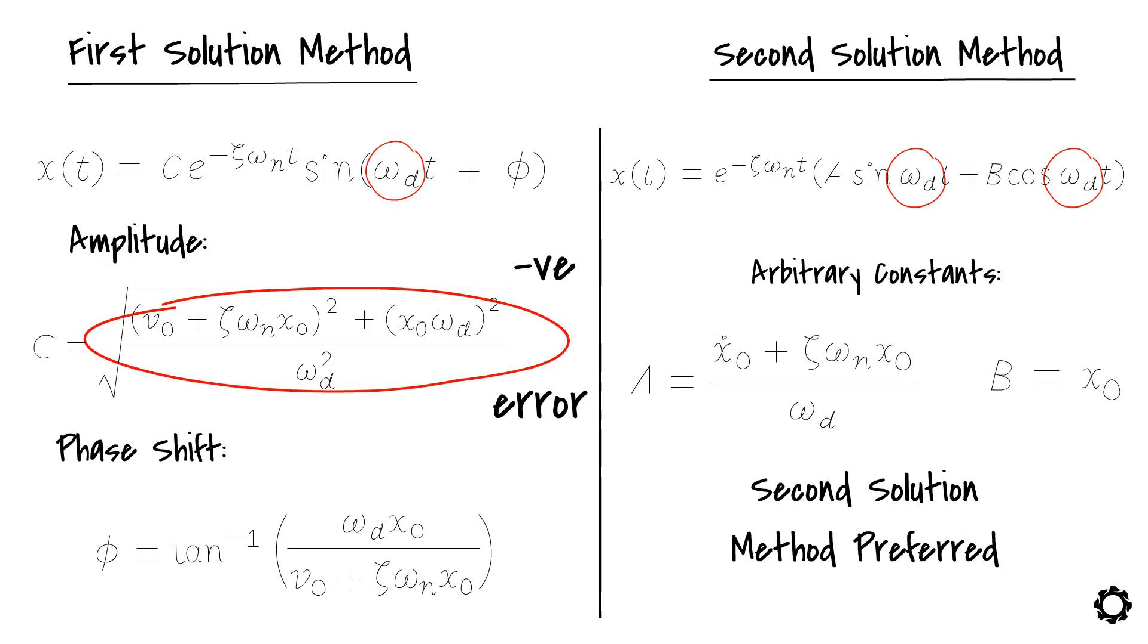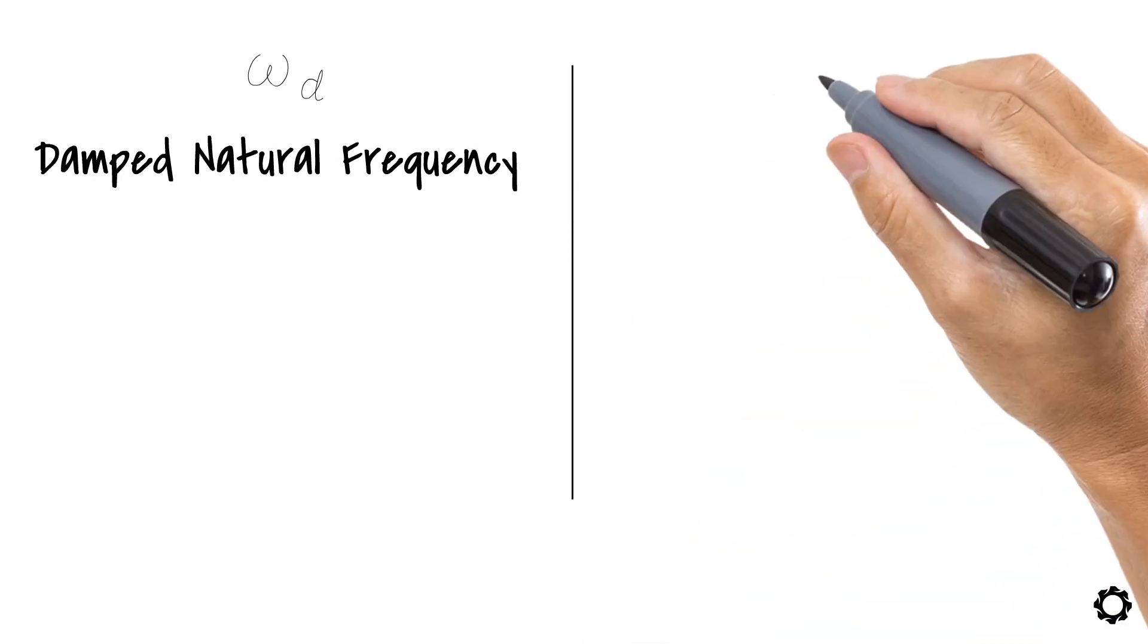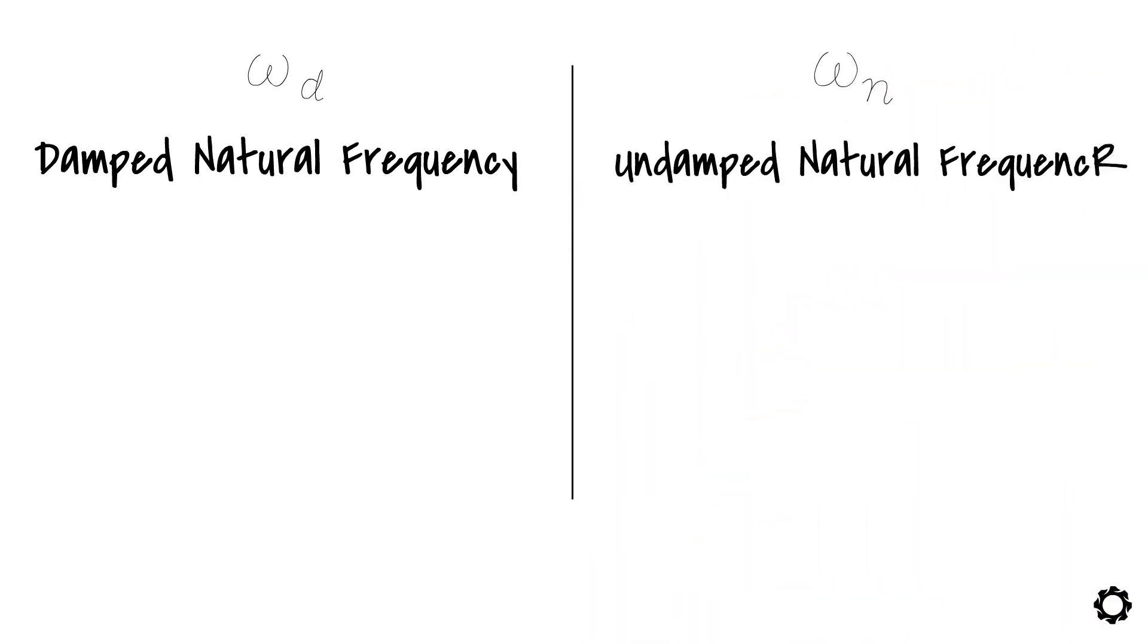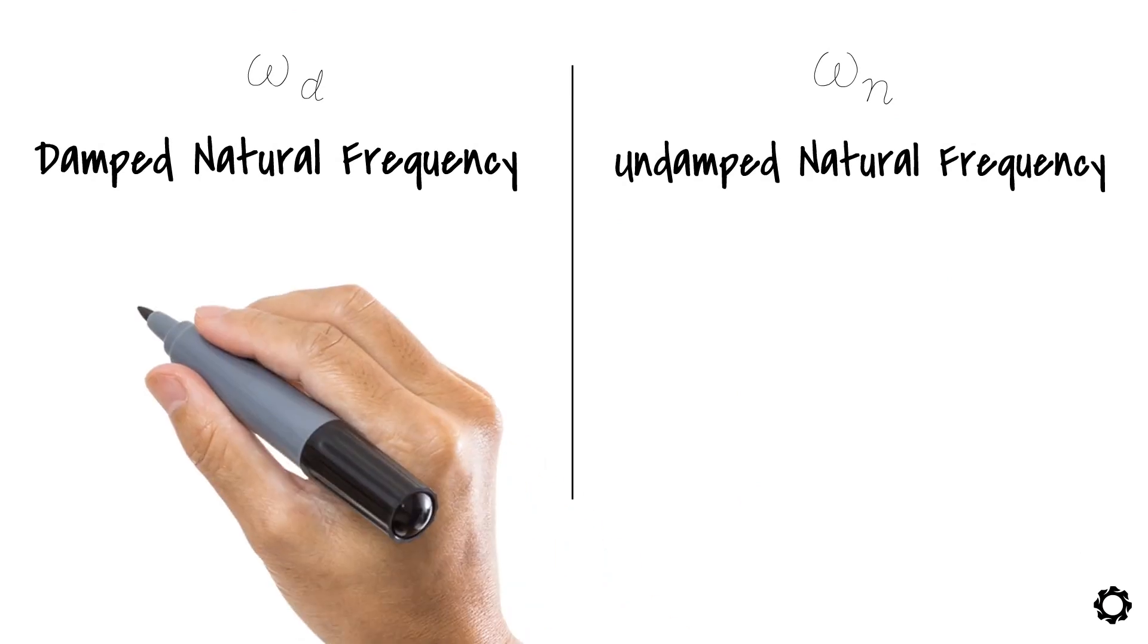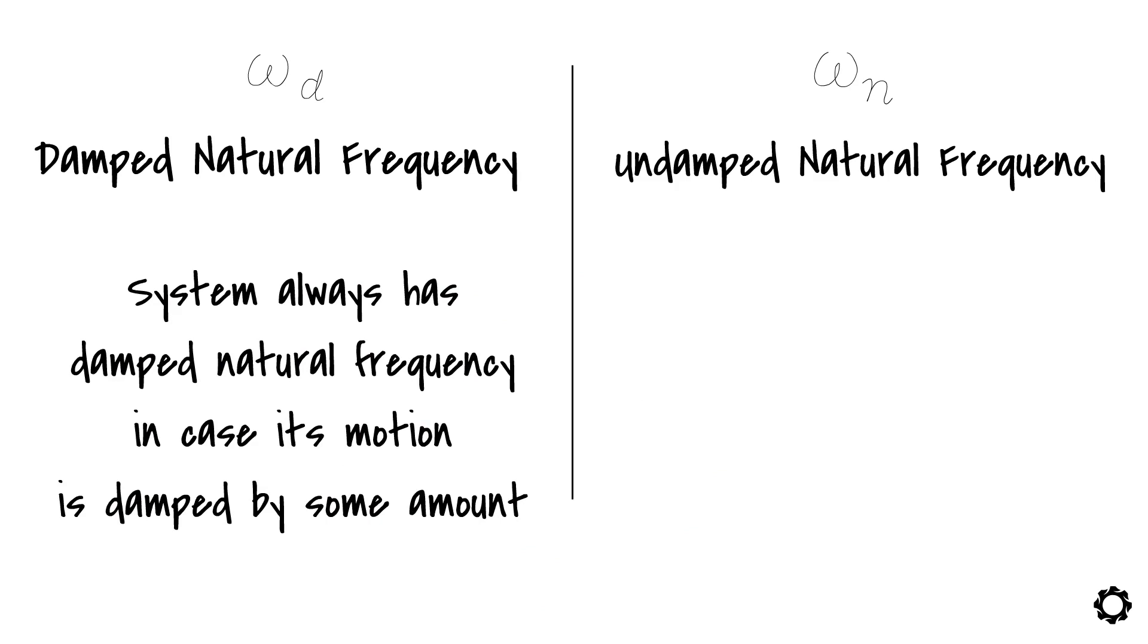Now, this is the moment that we have all been waiting for. We are going to reveal the secret identity of the term omega d. It's called damped natural frequency, which shouldn't be confused with the term omega n, which instead represent undamped natural frequency. The system always has a damped natural frequency in case its motion is damped by some amount.